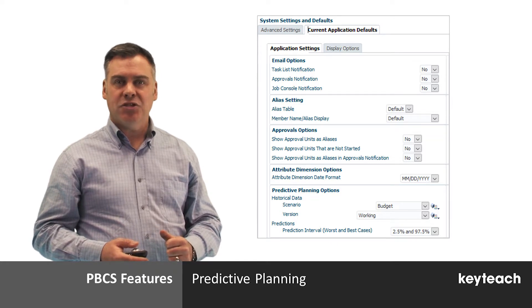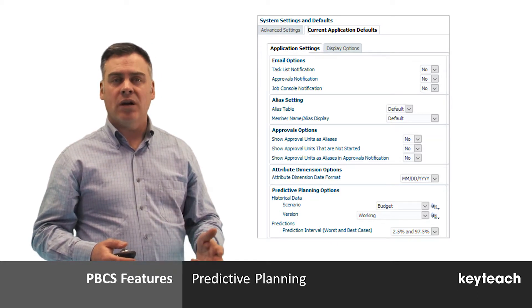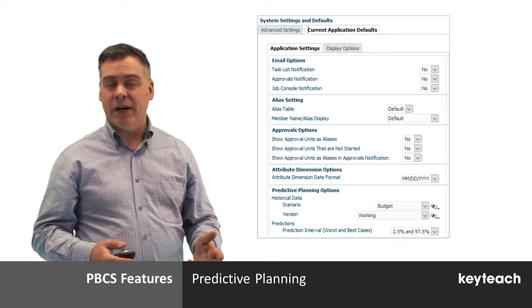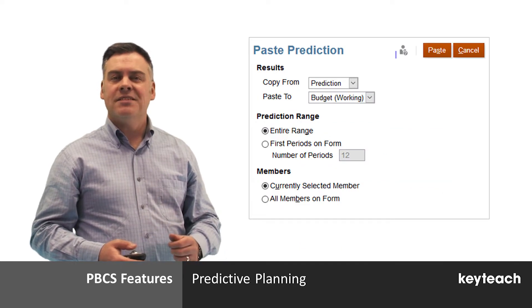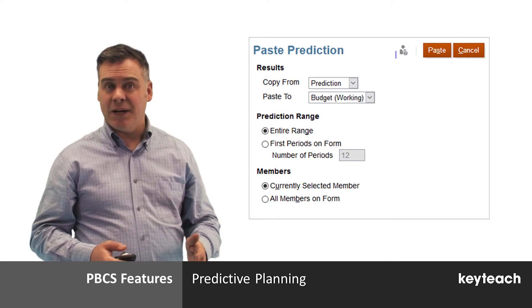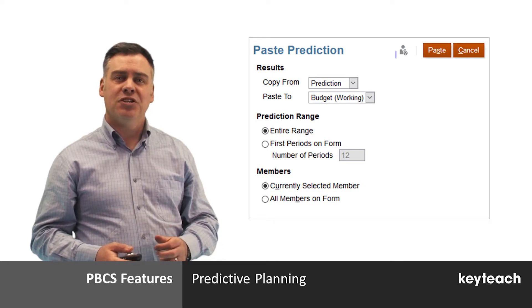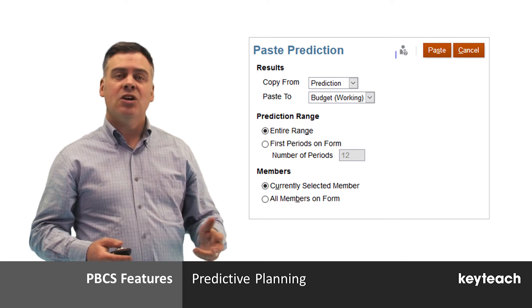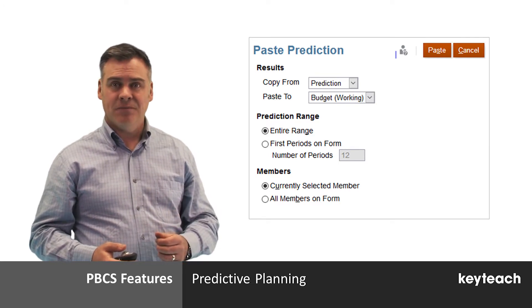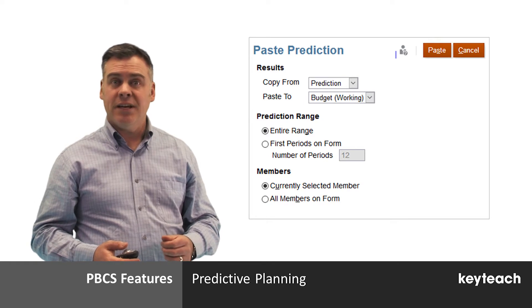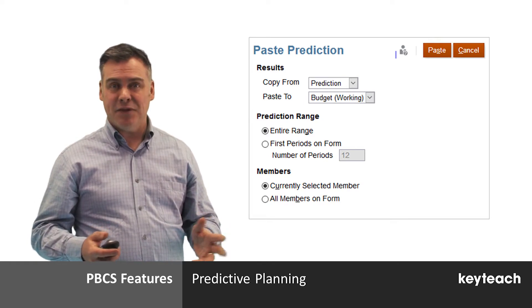You can access this feature by choosing the predictive planning option on either the actions menu or the right-click menu. Selecting this option will launch the predictive planning panel, showing a set of graphical predictions including the main prediction as well as a best and worst case prediction. Key metrics are also shown here, giving clear visibility about the predicted values.